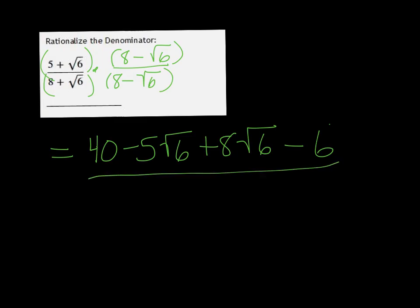In the bottom, 8 times 8 is 64. 8 times negative root 6 is minus 8 root 6, and root 6 times 8 is plus 8 root 6.